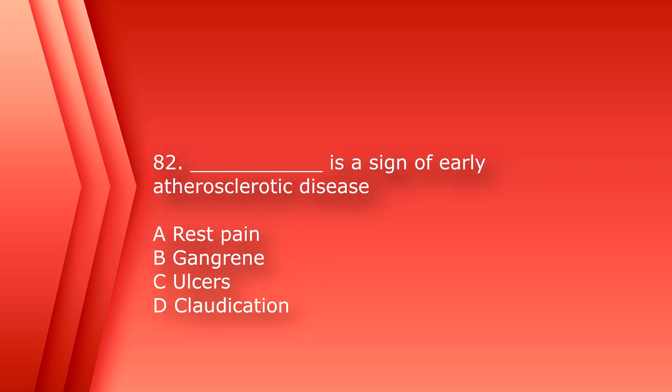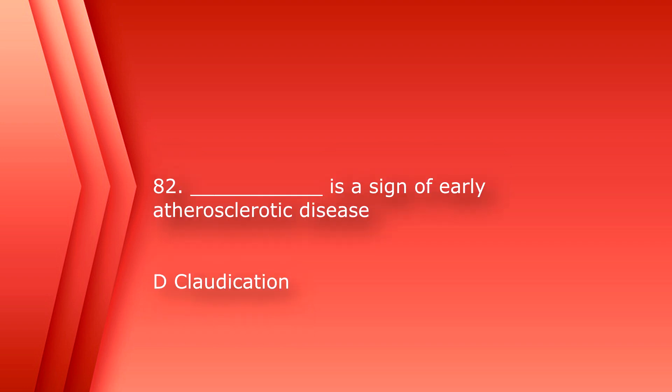Number 82: blank is a sign of early atherosclerotic disease. A. Rest pain. B. Gangrene. C. Ulcers. Or D. Claudication. The answer is D. Claudication.